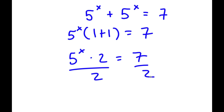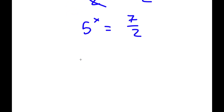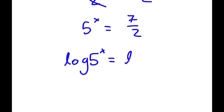Now I can divide both sides by 2, so I get phi to the power of x is equal to 7 over 2. Now to solve this, I'm going to take the log on both sides. So I have log of phi to the power of x is equal to log of 7 over 2.